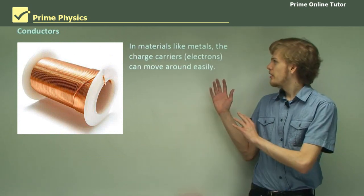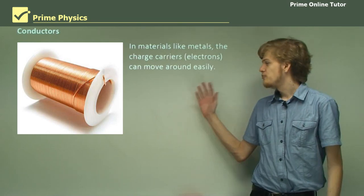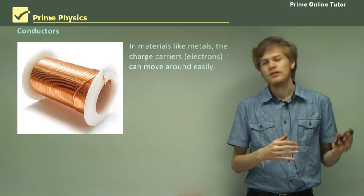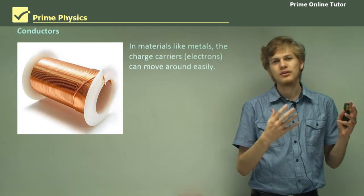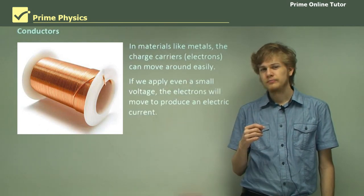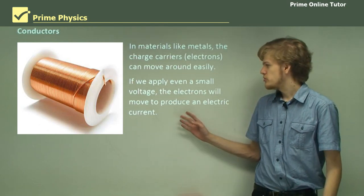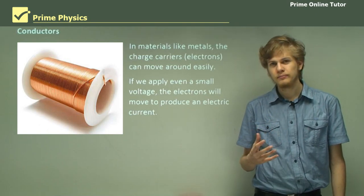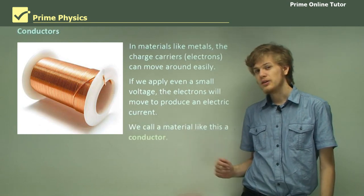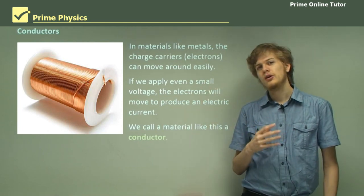In materials like metals, the charge carriers — which are electrons in the case of metals — are free to move around quite easily. So we have charge carriers that can very easily transmit electric charge and electric current. If we apply even a small voltage, even something in the region of a thousandth of a millivolt, then the electrons will quite happily move across and produce an electric current, because they're free to move. So we call a material like this a conductor. In a conductor we have plenty of charge carriers that can move around even with low voltages.